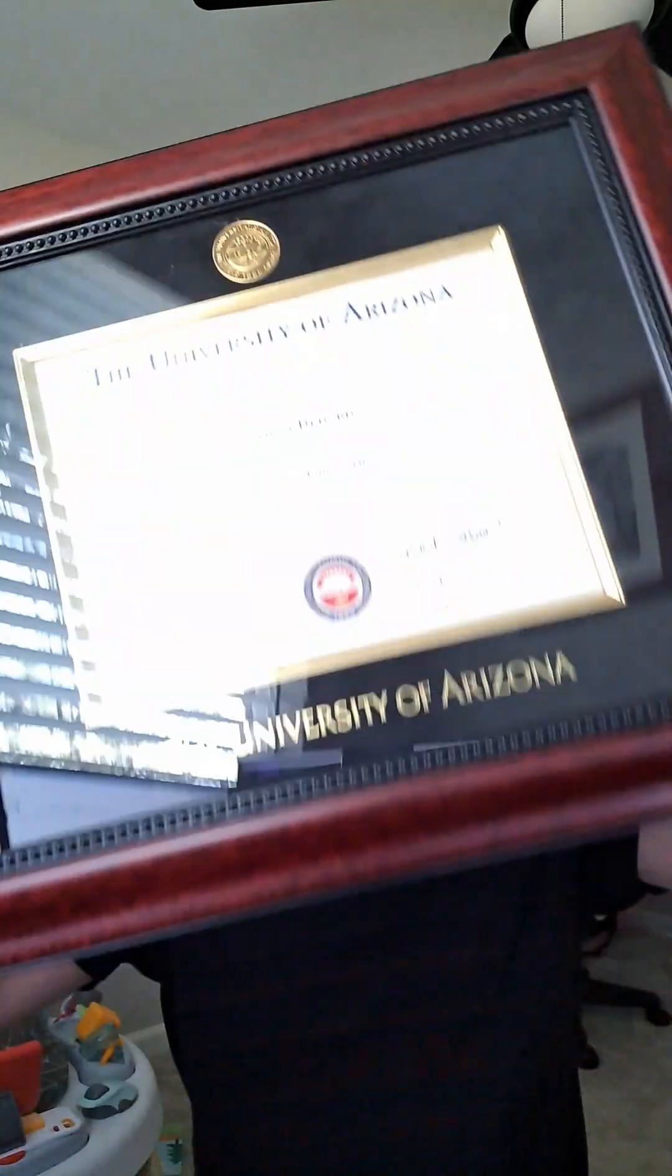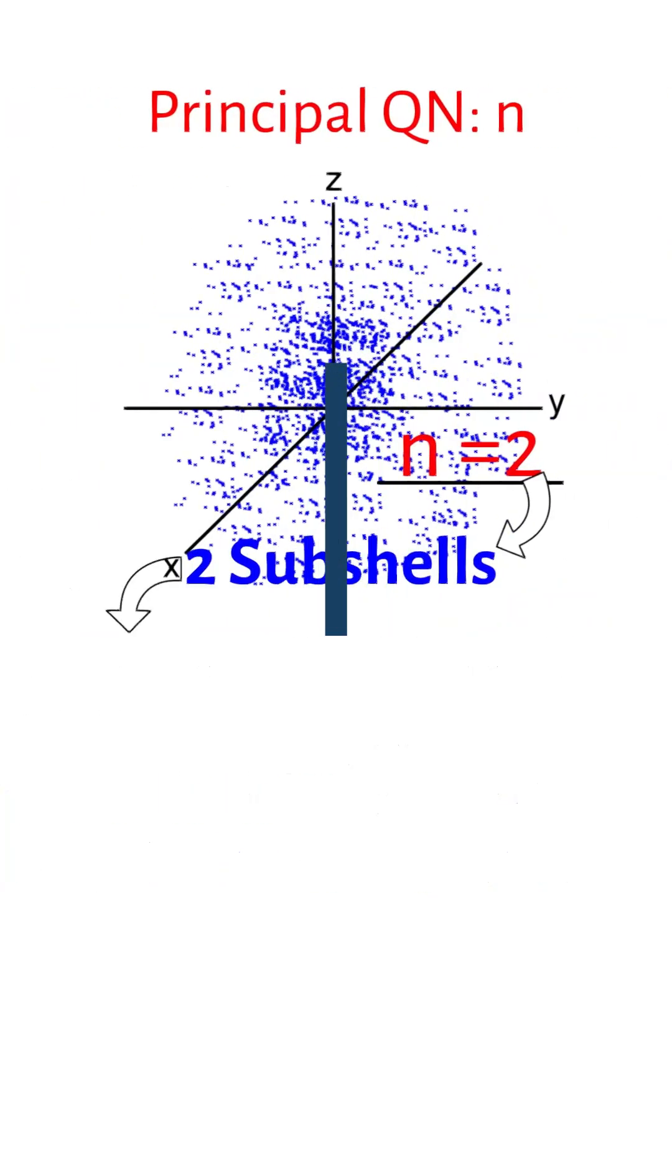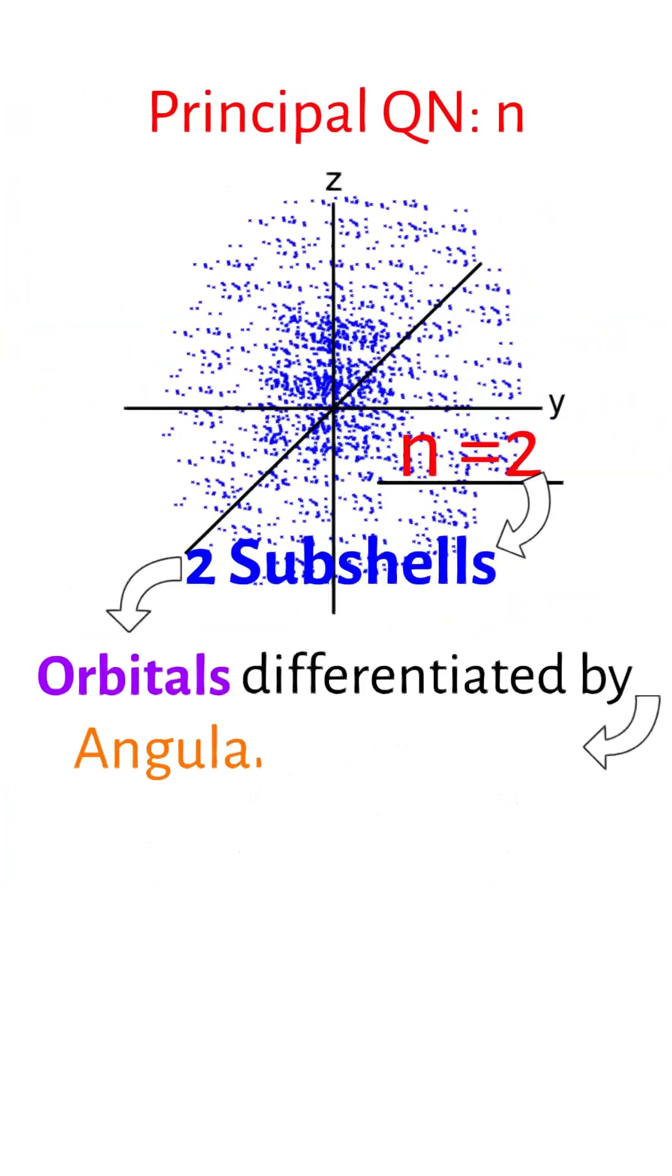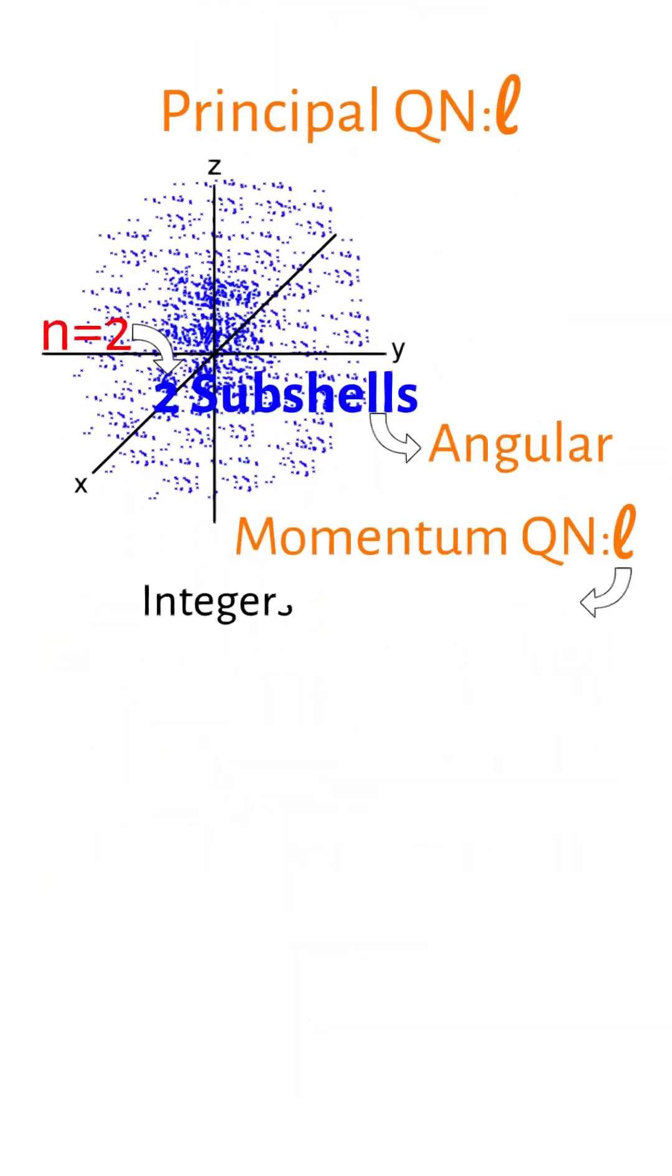This is my PhD in chemistry, and this is how L orbitals are split into suborbitals by M sub L. However, these subshells are differentiated into orbitals by the angular momentum quantum number L. These L orbitals have numerical values of integers from 0 to N minus 1, and are generally defined by the letters S, P, D, and F for the numbers 0, 1, 2, and 3.